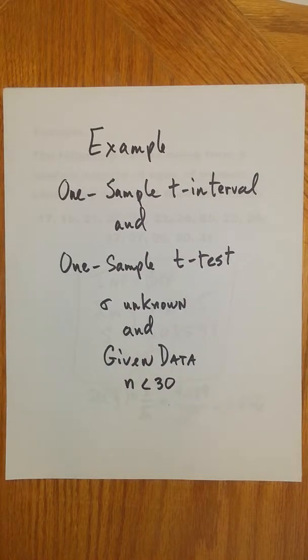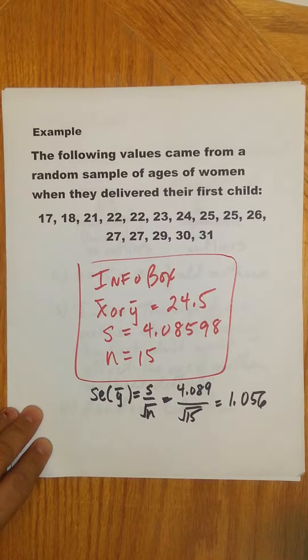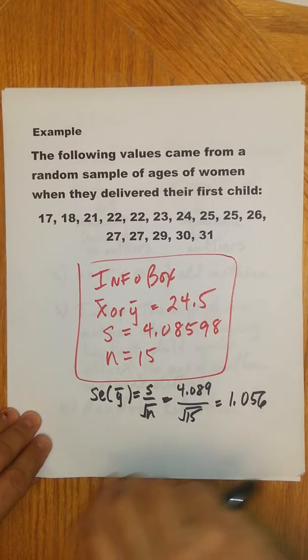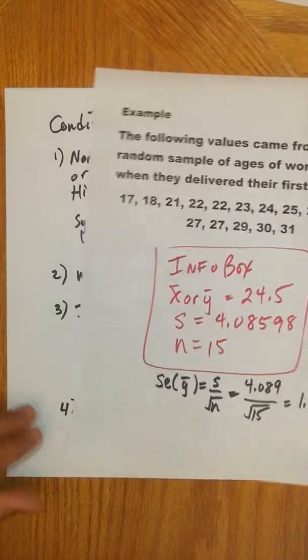Hello. In this video, we're going to look at an example for a numerical trait. We're going to do a one-sample t-interval, which is a confidence interval for a mean, and also a one-sample t-test, a hypothesis test for a mean, where the standard deviation for the population is unknown, and we're given data but we have fewer than 30 data values. So the central limit theorem does not apply.